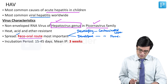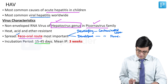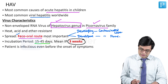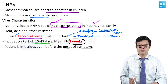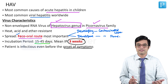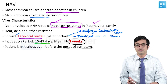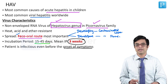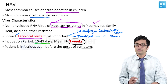The incubation period ranges between 15 to 45 days. Nelson says the mean incubation period is about 3 weeks. The patient is infectious even before the onset of symptoms because the virus is excreted into the stool. Normally, the virus is ingested through contaminated food or water, reaches the small intestine, then through the portal vein reaches the liver, where it produces inflammation. After replicating in hepatic cells, via bile it reaches back into the gut and is secreted into the stool.